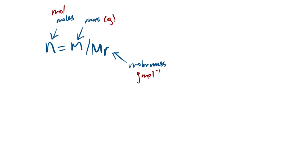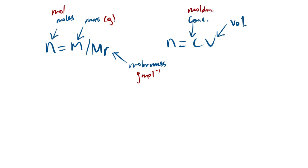Next up: moles again, n equals cv — concentration times volume. The units of concentration are primarily moles per decimeter cubed, and volume is in decimeters cubed. In a question, volume is normally given in centimeters cubed, so you have to divide by a thousand. This is super basic stuff you should have used at GCSE, and we can build upon it and apply these equations in more complex questions.